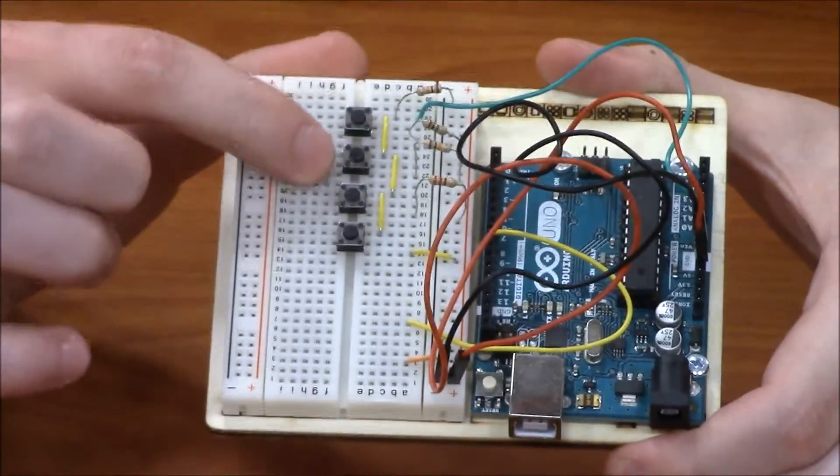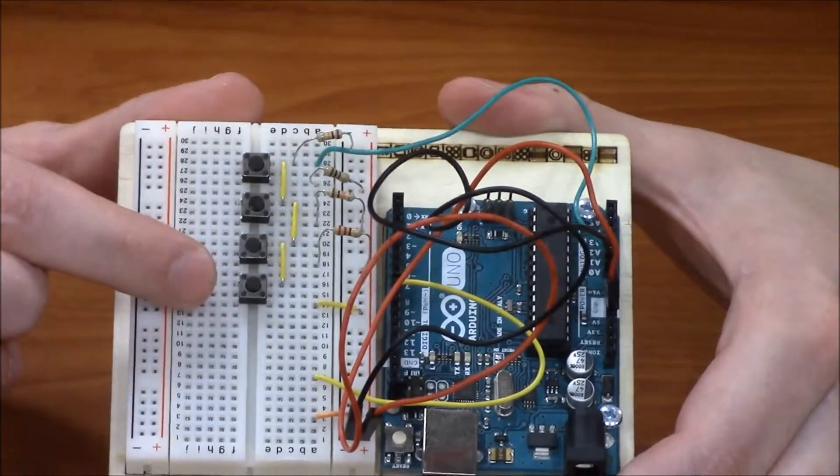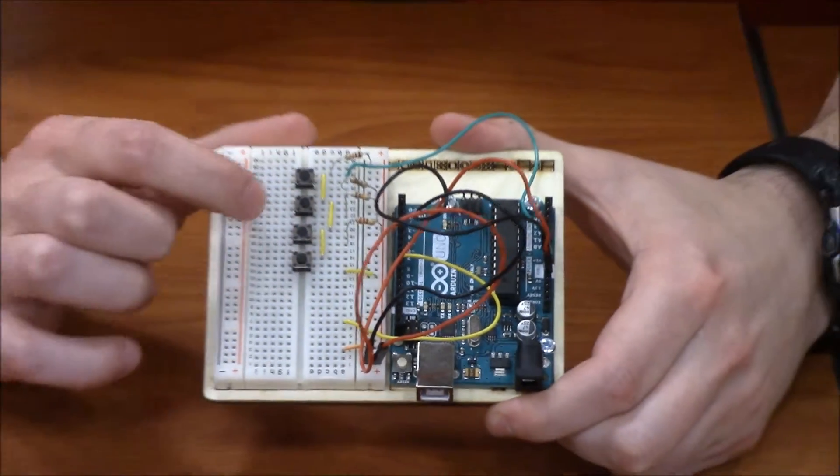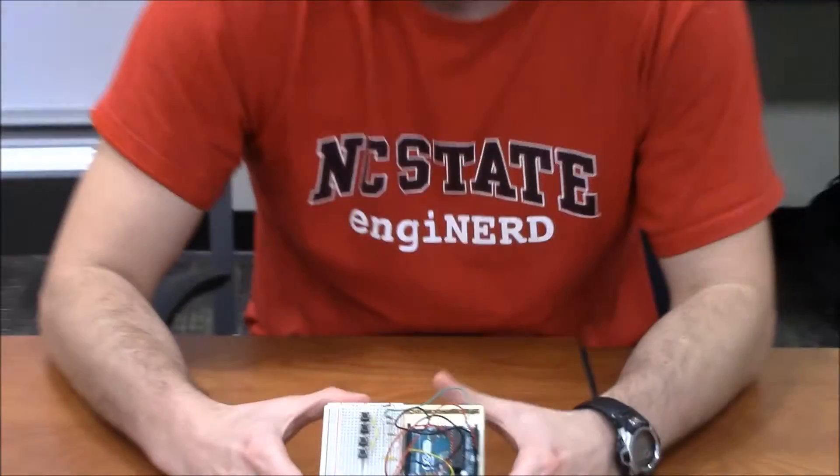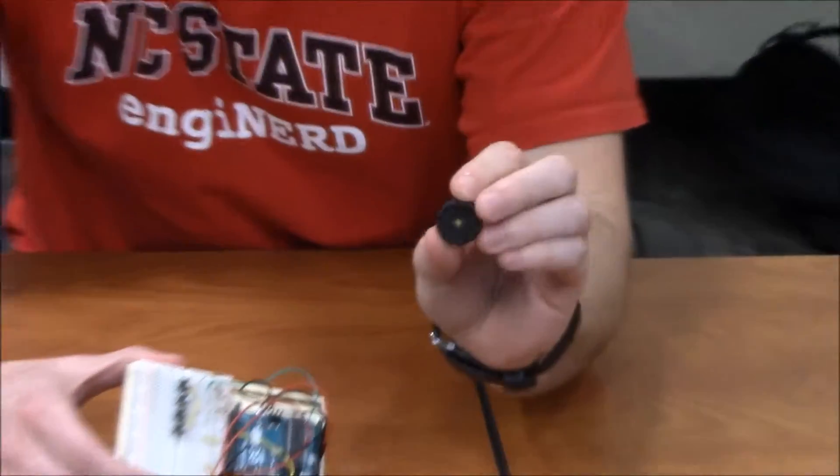There are some switches here and resistors, and basically this is just a voltage divider. Depending on which switch is pressed, it's going to apply a different voltage to this little guy right here. This is our piezoelectric device.